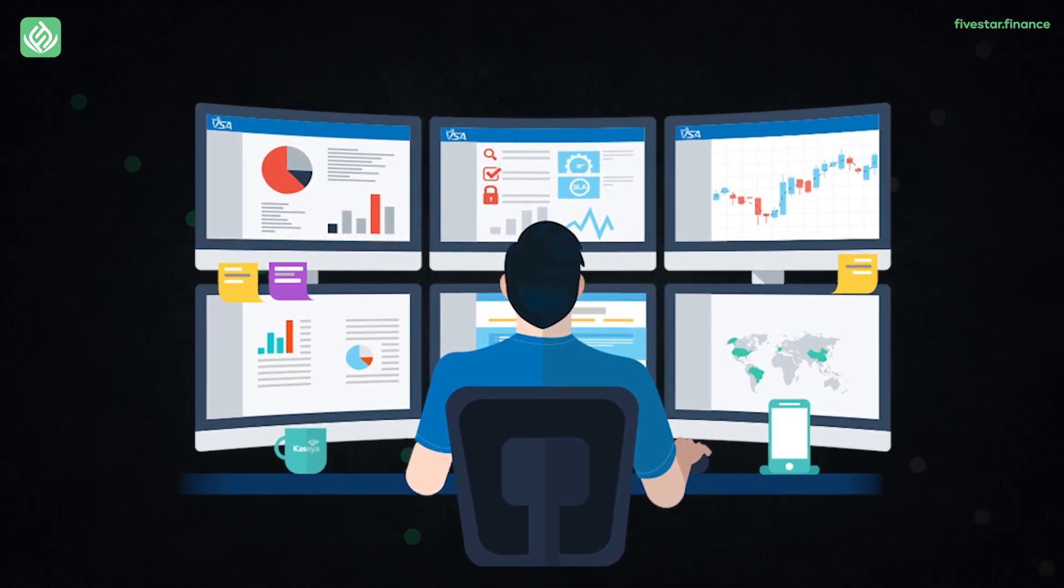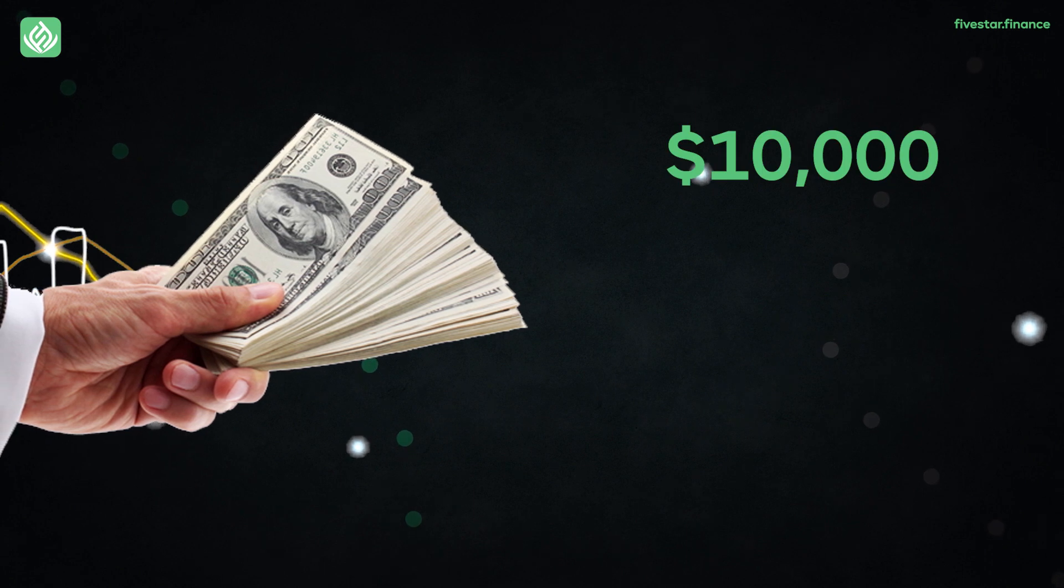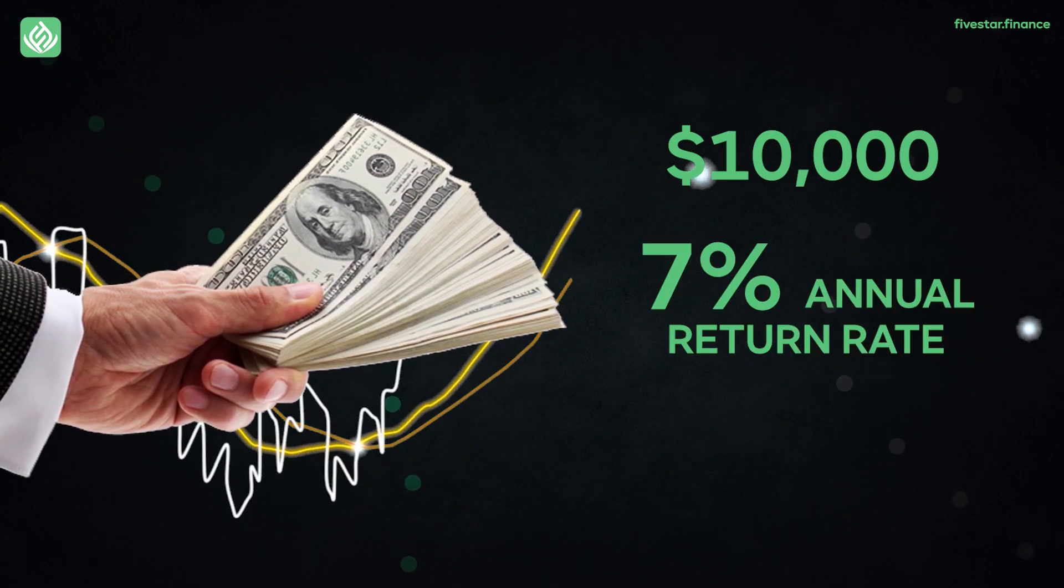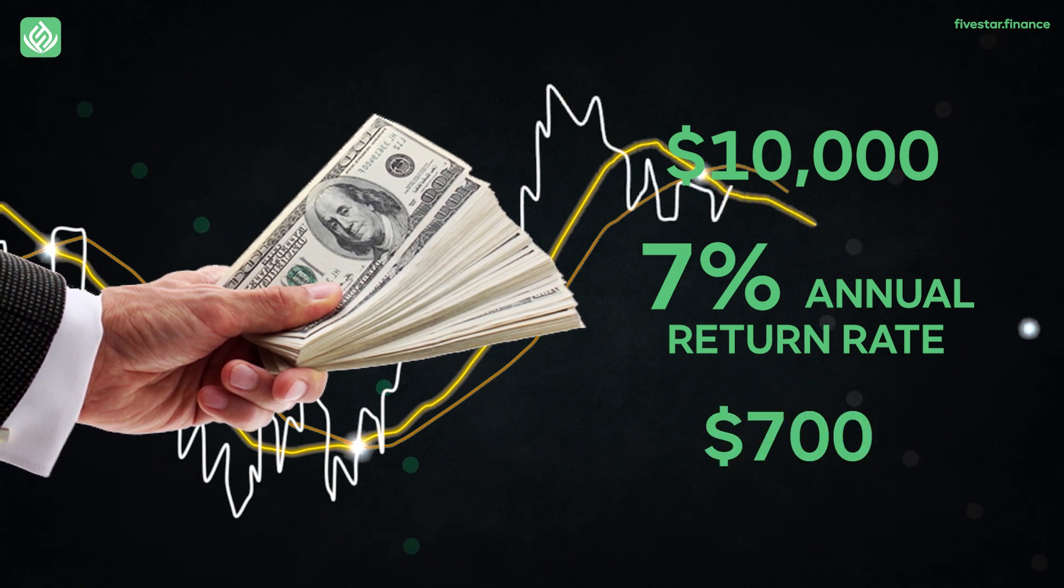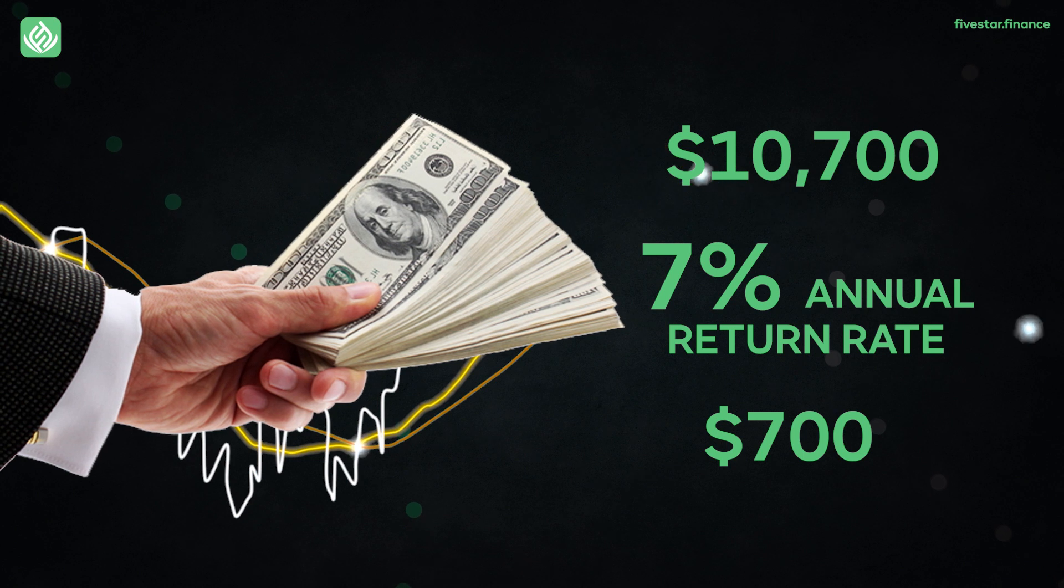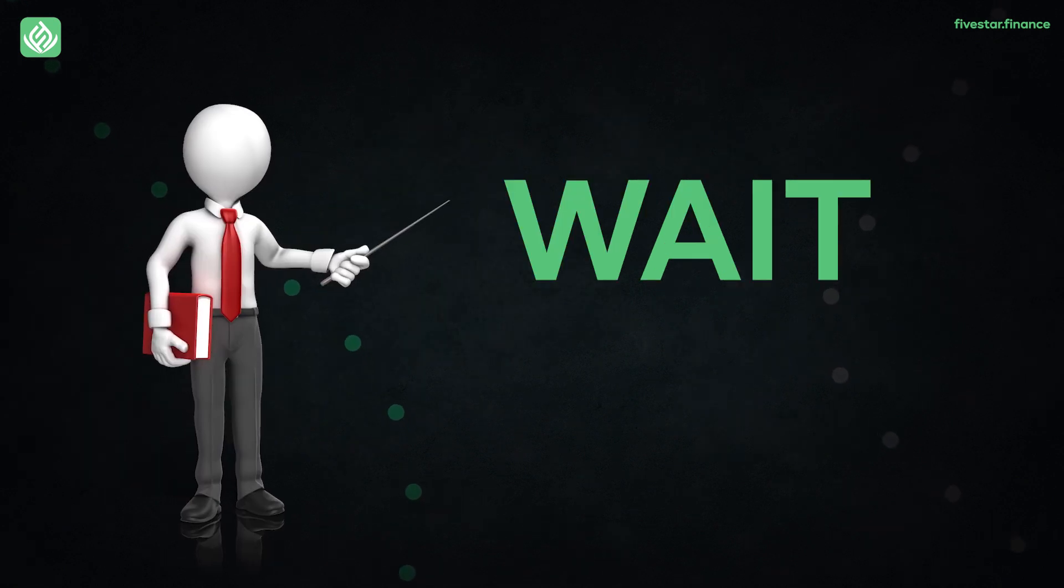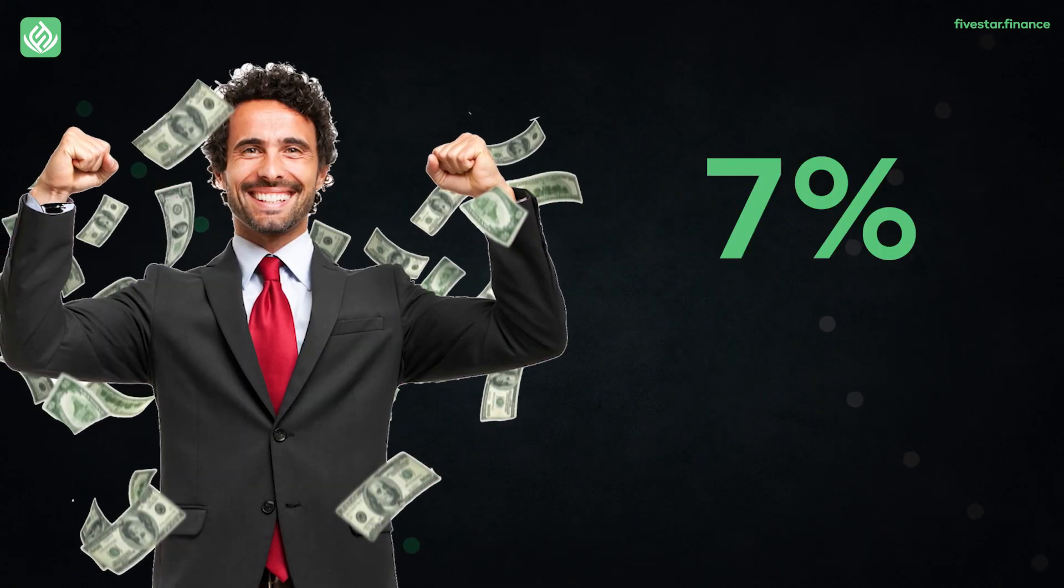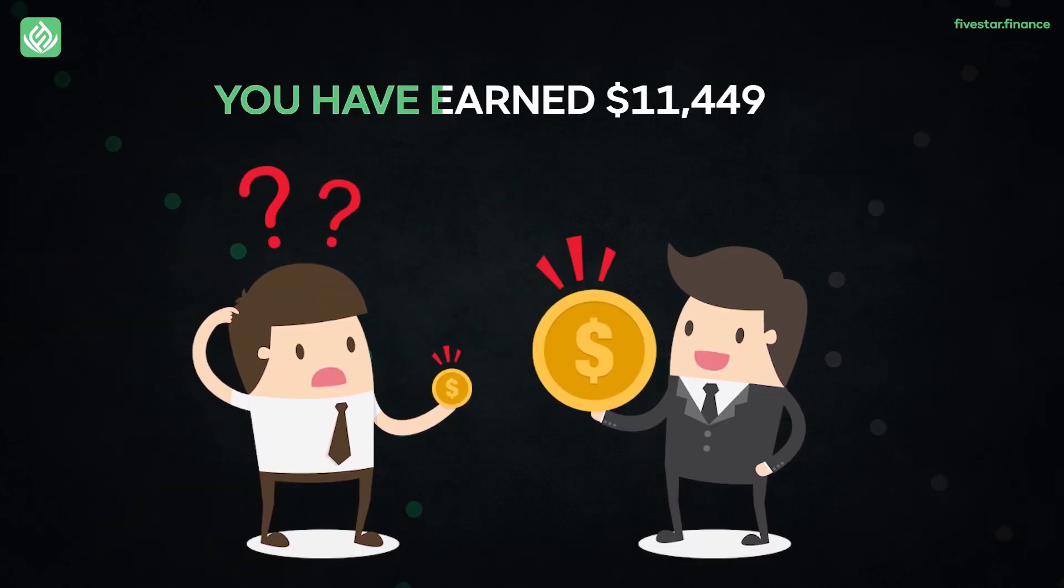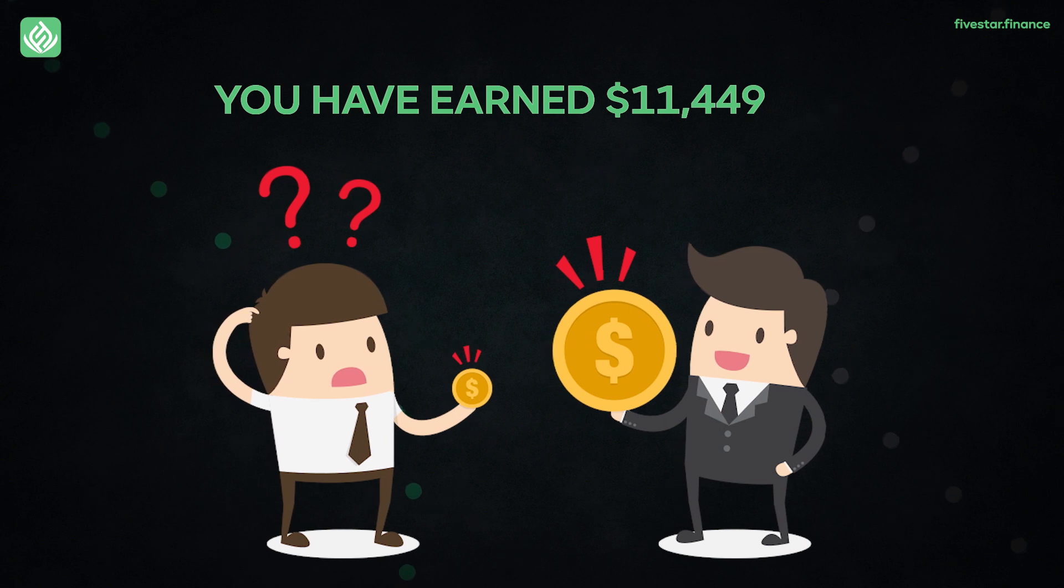Getting back to our example, after investing $10,000 in the stock market, by making use of the 7% annual return rate, you made profit worth $700. And now your $10,000 has turned into $10,700. But wait for the real magic to begin. Now if you earn 7% on this new sum, that means in the next year, all of a sudden you have earned $11,449.